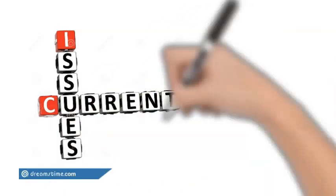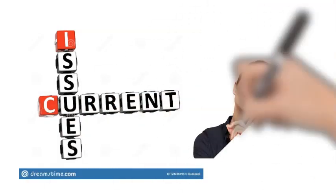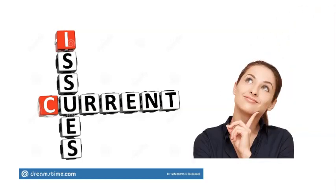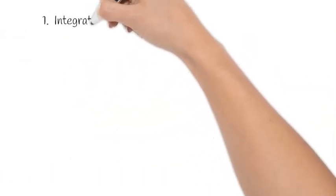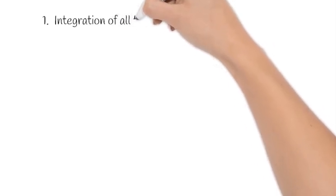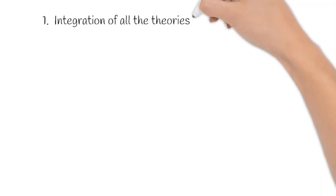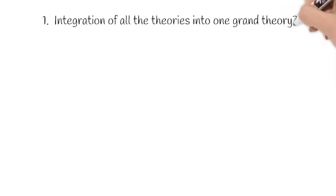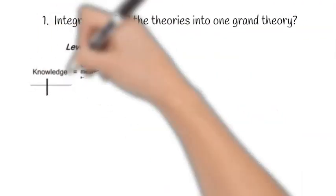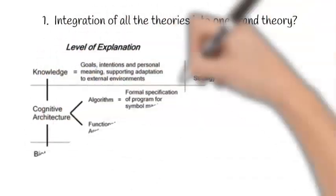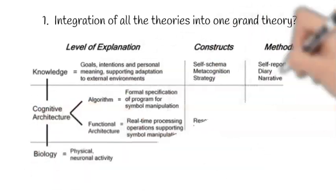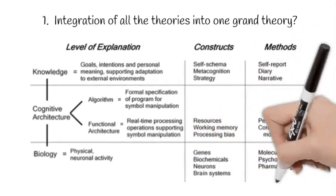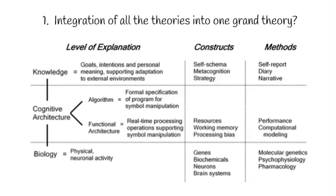The previous slides gave us a brief overview of personality psychology. Now let's look at the current issues in the field. The first issue is whether it is possible to integrate all the different theories of personality into one grand theory. At the moment, it does not seem possible to achieve this feat, so the suggestion is to consider that all these theories are providing different levels of explanation. Some theories look at individual differences in people's goals, intentions, and meaning, and so these are at the knowledge level of explanation. Some theories look at individual differences in thinking and processing, and therefore are at the cognitive level of explanation. Finally, some theories look at individual differences in the physical and neuronal level.